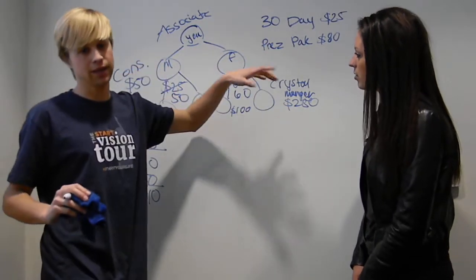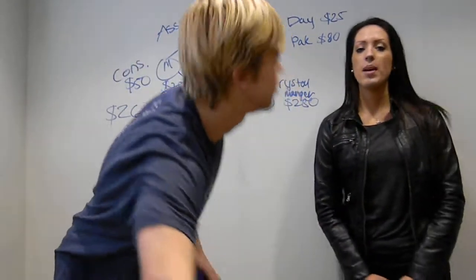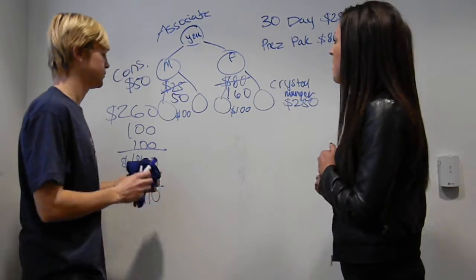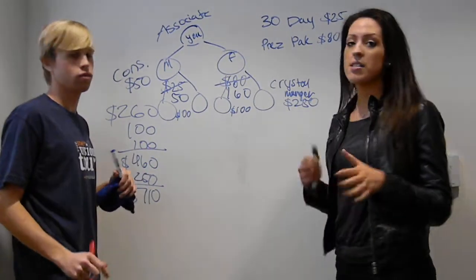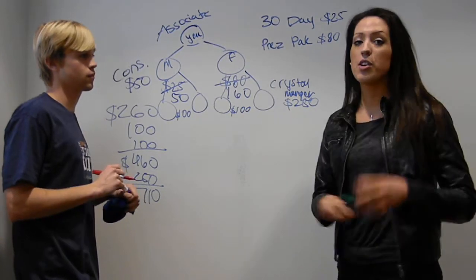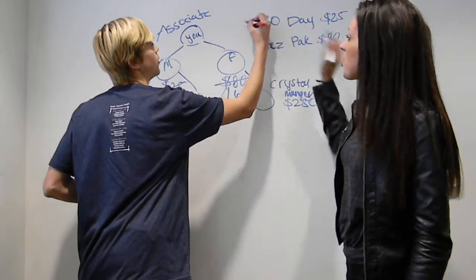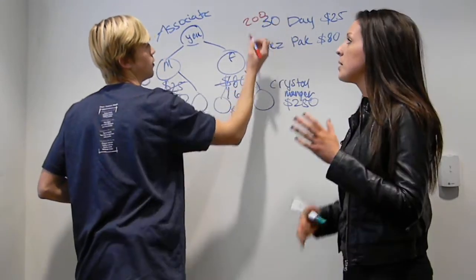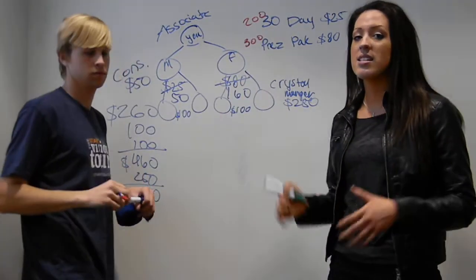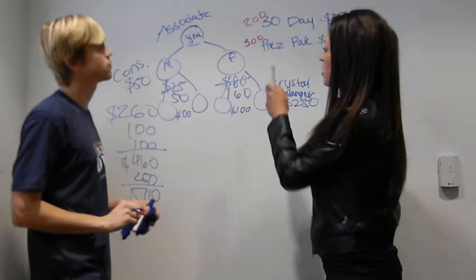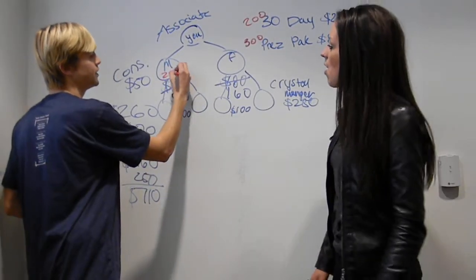So $250 for that. So now you've paid for everything you've enrolled and some. So now what you do is explain the residual and how all that goes into play. So basically all of our products, packages, and products have a point system to it. We call it business volume. For this we're just gonna refer to it as points, it's the easiest way to explain it. So like Wesley was saying, the 30-day system has approximately 200 points with it. The bigger the package, the more points that it will have along with it. So for the President's Pack we have 300 points.